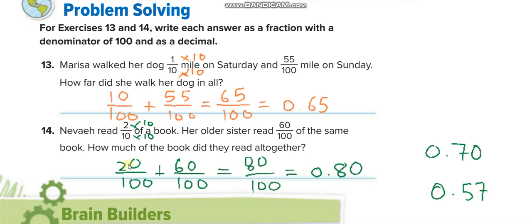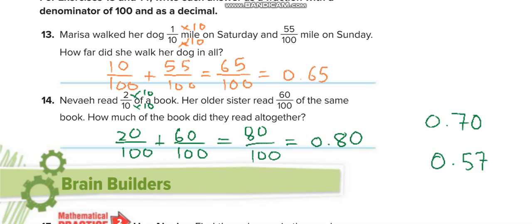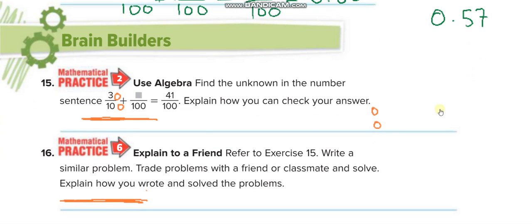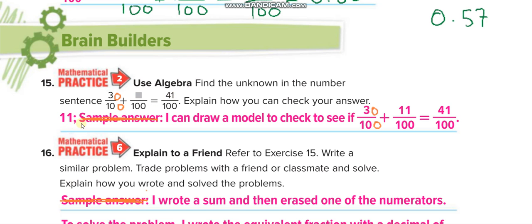Similarly here, 2 over 10 is 20 over 100, plus 60 over 100 is 80 over 100, which is 0.80. Okay, this one: what is the missing number here? Because the denominator is 100, to make it 100 we'll multiply by 10. 30 plus what equals 41? 11. 30 plus 11.